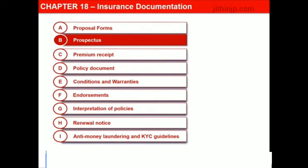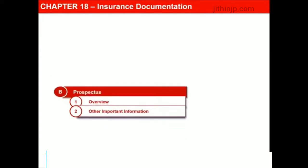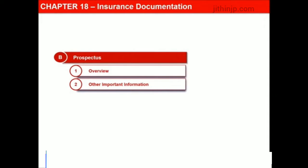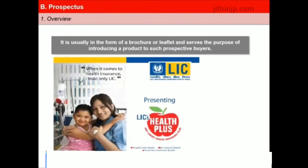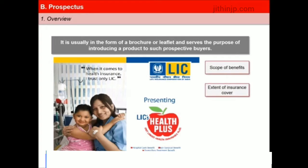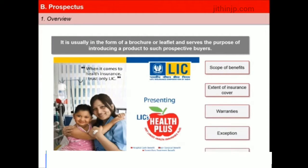A prospectus is a document issued by the insurer or on his behalf to the prospective buyers of insurance. It is usually in the form of a brochure or leaflet and serves the purpose of introducing a product to prospective buyers. The prospectus of any insurance product should clearly state the scope of benefits, the extent of insurance cover, and explain in a clear manner the warranties, exceptions and conditions of the insurance cover.